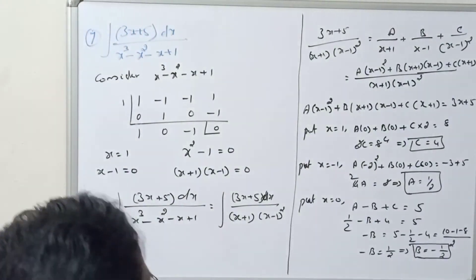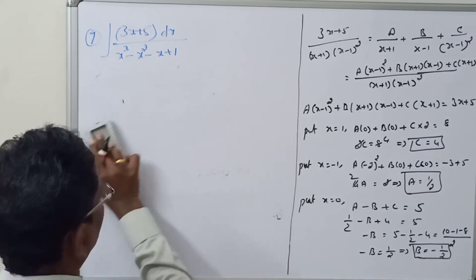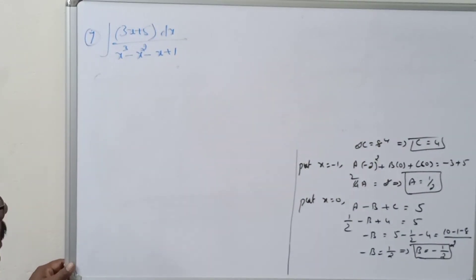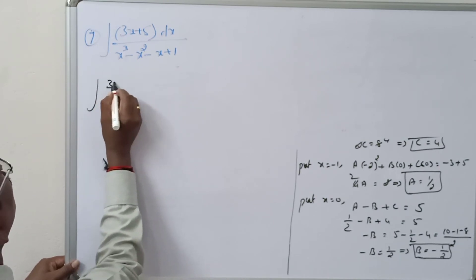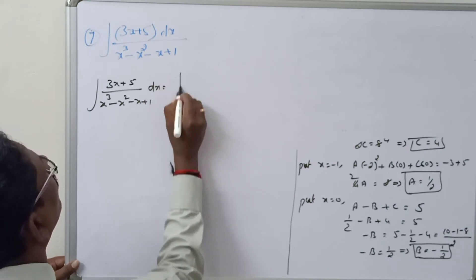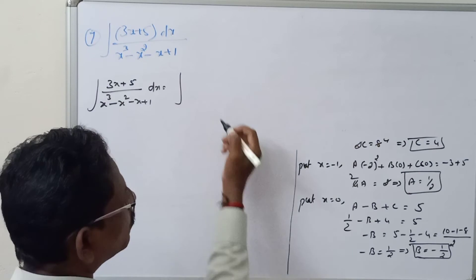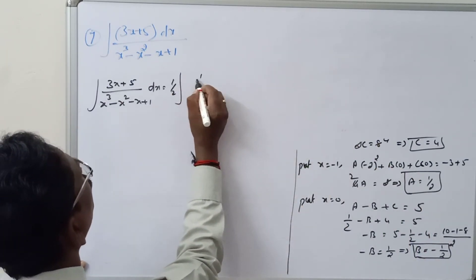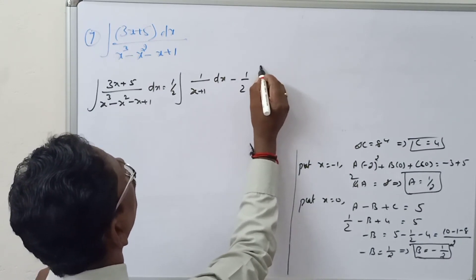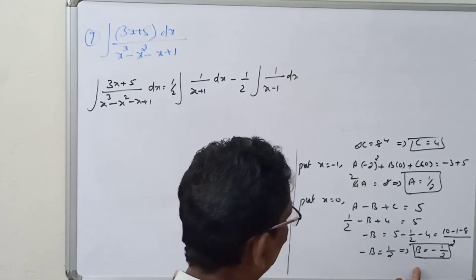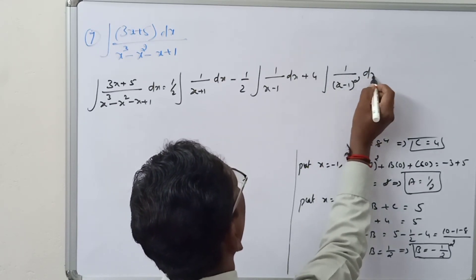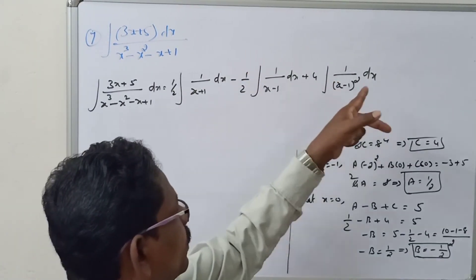So the values are: A = 1/2, B = -1/2, C = 4. Substituting into the integral: ∫(3x + 5)/[(x + 1)(x - 1)²] dx = (1/2)∫1/(x + 1) dx + (-1/2)∫1/(x - 1) dx + 4∫1/(x - 1)² dx.